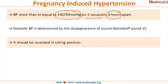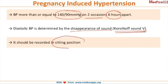The diastolic BP that we record is determined by the disappearance of the sound, that is Korotkoff sound phase five. The second important thing is that it should be recorded in sitting position with the hand at the level of the heart. BP taken in supine position is not accurate, so it should always be taken in sitting position.